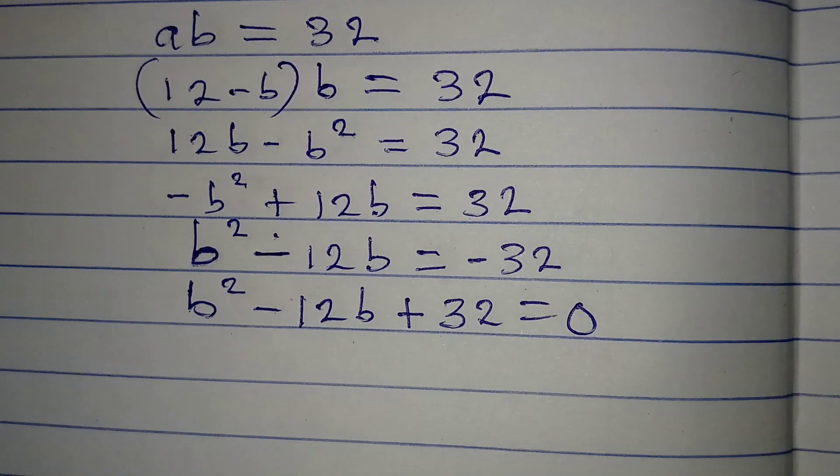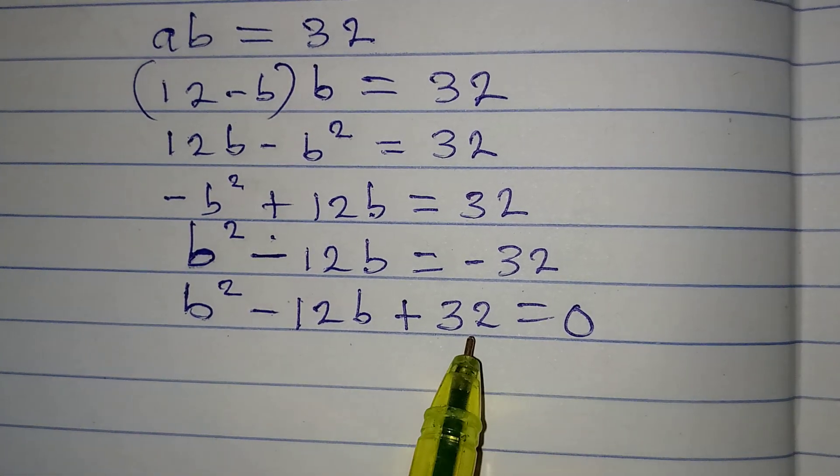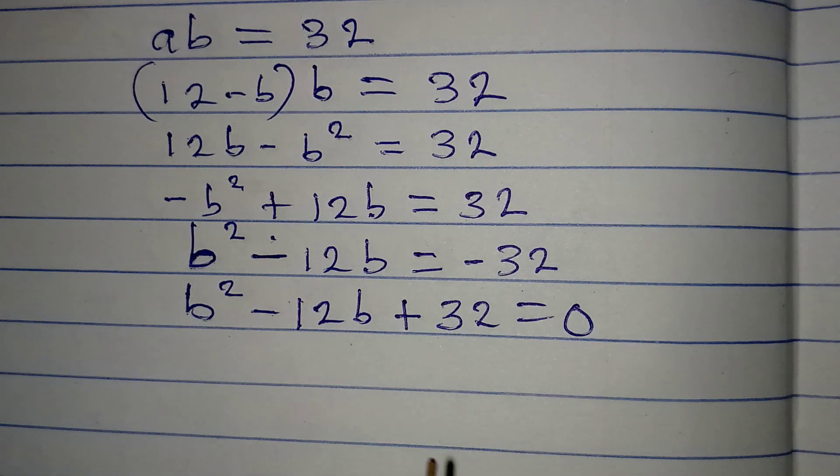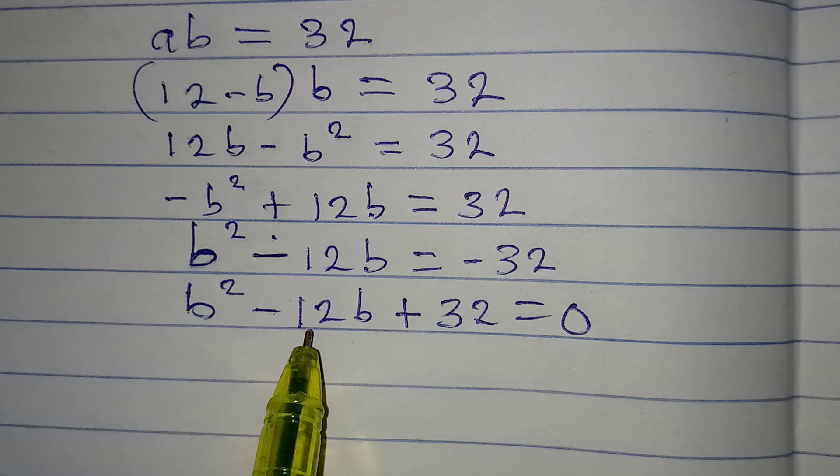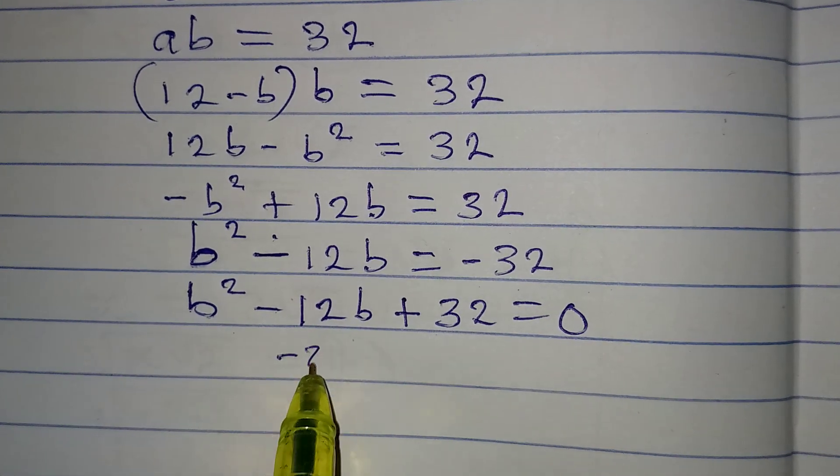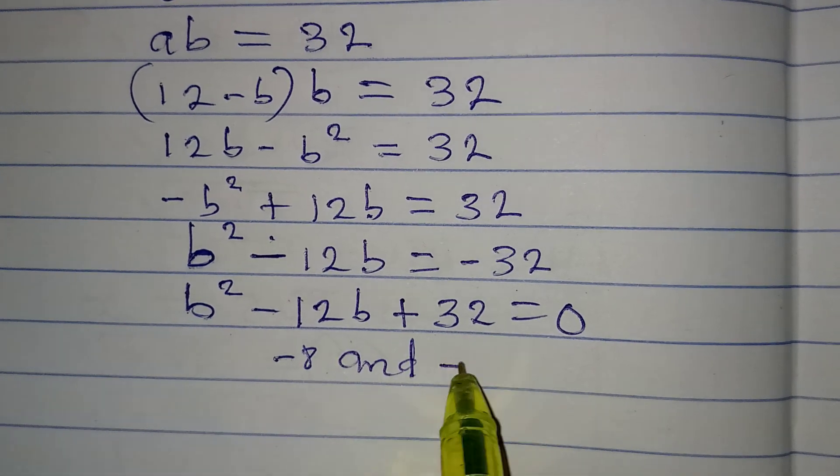So the next thing is what two numbers do we multiply to have 32, and that will bring them together to get minus 12. The two numbers will be minus 8 and minus 4.